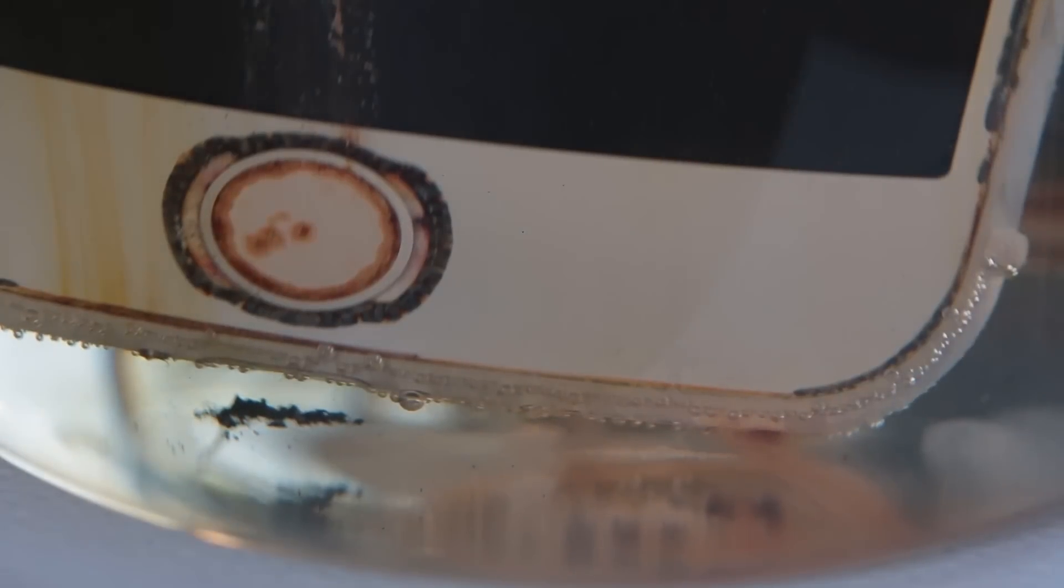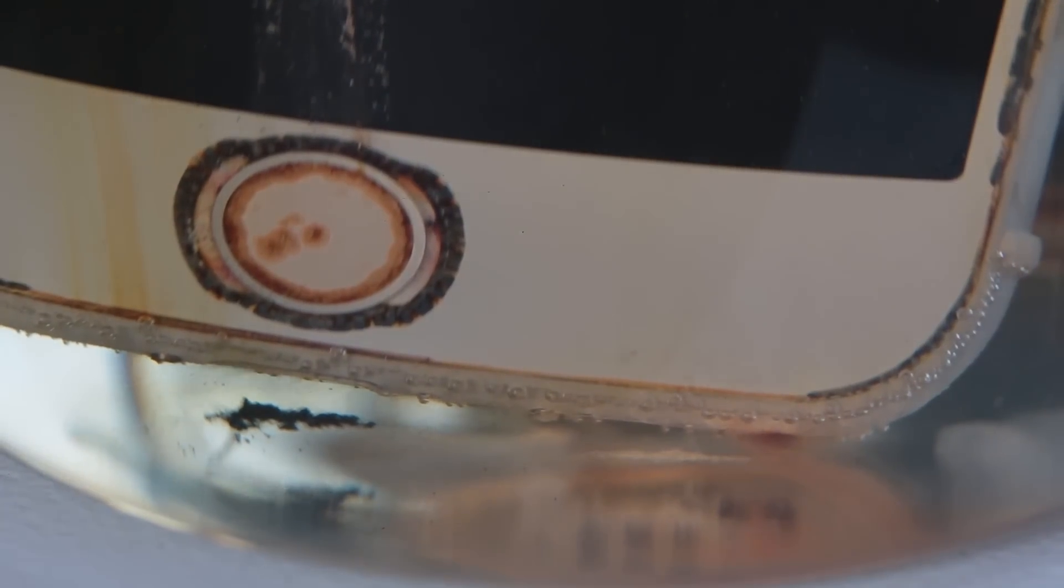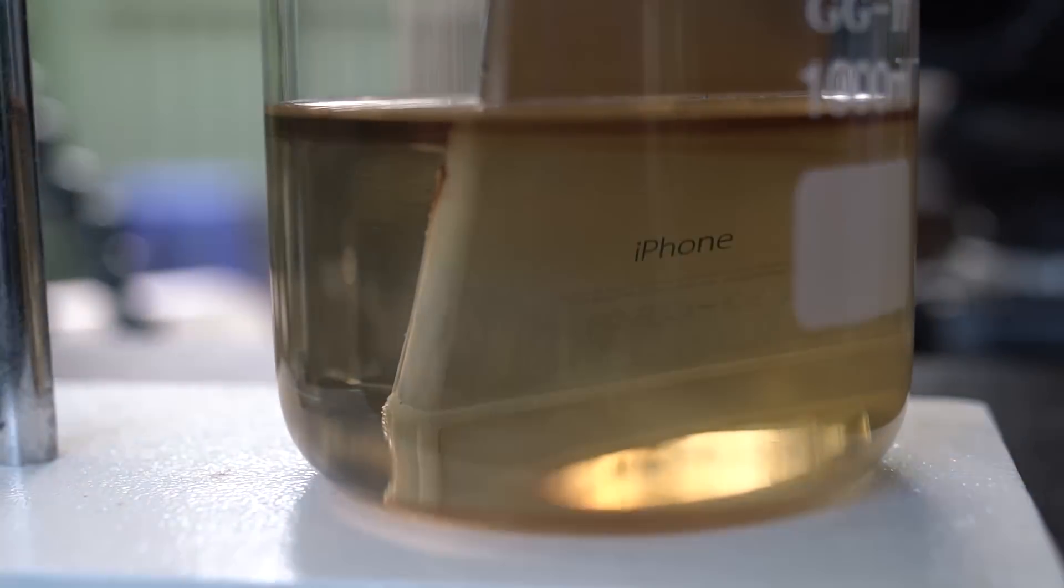This is a close-up of what's happening. You can see the bubbles accumulating around the edge of the phone. It seems like the bubbles are mainly accumulating around the edge of the phone. If you look closely the plastic seals of the phone is starting to swell up and soaking in acid.